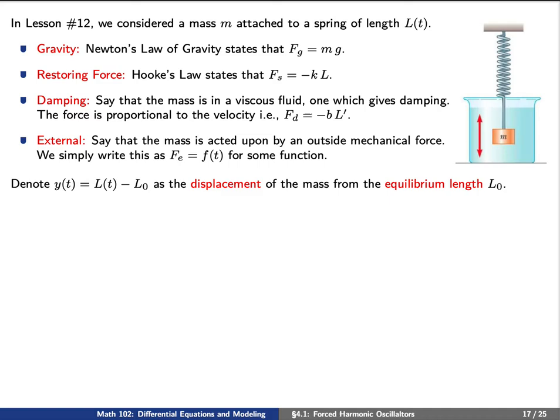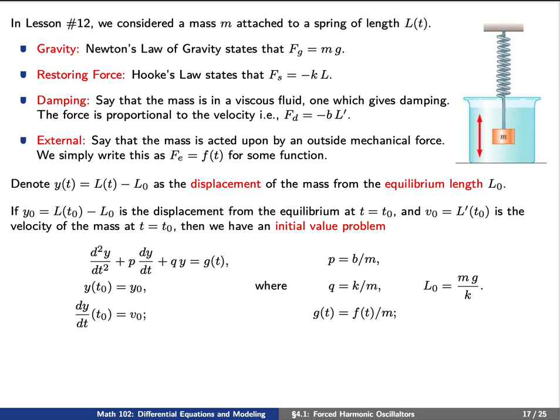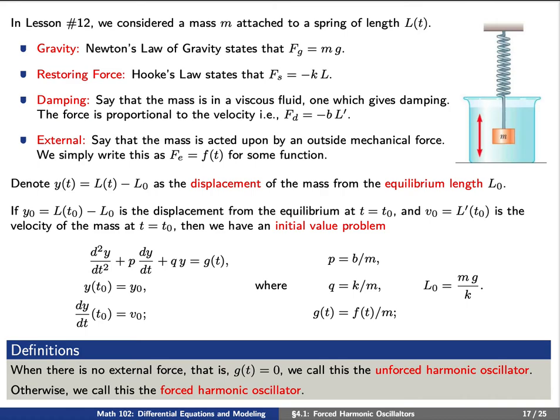Let y(t) denote the displacement of the mass from the equilibrium length l0, so y(t) equals l(t) minus l0. If y0 is the displacement from equilibrium at time t0 and v0 is the velocity at time t0, then we have an initial value problem where p equals b/m, q equals k/m, g(t) equals f(t)/m, and the equilibrium length l0 equals mg/k. When there is no external force, g(t) equals zero, we call this the unforced harmonic oscillator; otherwise, we call this the forced harmonic oscillator.